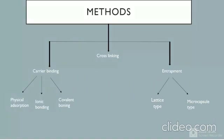The methods of immobilization are: first, carrier binding — which is further categorized into physical adsorption, ionic bonding, and covalent bonding; second, cross-linking; and third, entrapment — which is characterized into lattice type and microcapsule type. Each will be explained one by one.